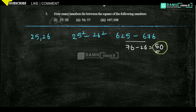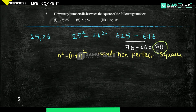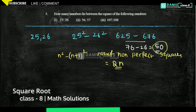So why 50? Because we have to remove 625 itself, and from 626 onwards we count up to 675. Another method: between n² and (n+1)², the number of non-perfect-square numbers follows the formula 2n. For example, between consecutive squares like 25² and 26², where n=25, the count would be 2 into 25 = 50.